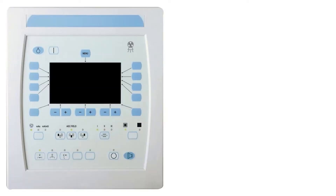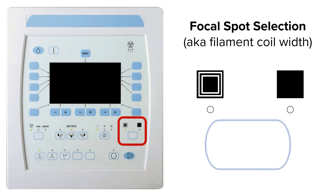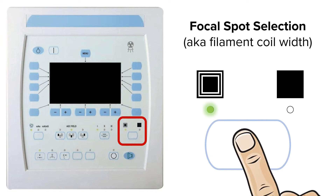As an x-ray tech, the only control you have over the size of the incident electron beam is by selecting the appropriate width of the filament coil. We do this by selecting either the small or large filament. You can select the small or large filament by selecting the small or large focal spot size on your control console.